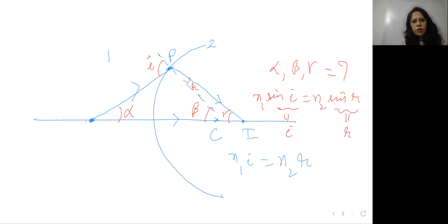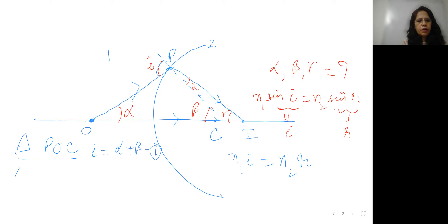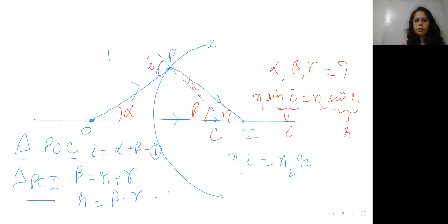From triangle POC, i is the exterior angle, so it equals the sum of the interior angles: i = alpha + beta. Let this be equation one. Now in triangle PCI, beta is the exterior angle, so beta equals r plus gamma, meaning r equals beta minus gamma. Let this be equation two.